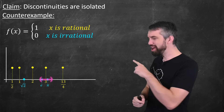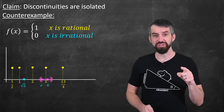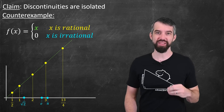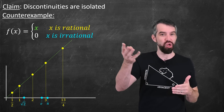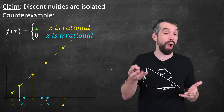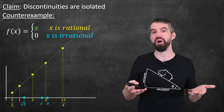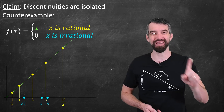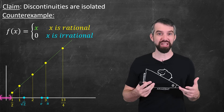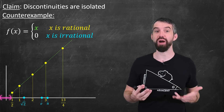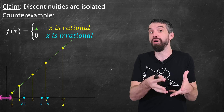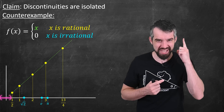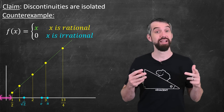If you modify this function — instead of having height 1 for the rationals, you make the height x for the rationals — you get the rationals going along a diagonal line while all of the irrationals remain along the axis. This function actually is continuous at one spot: it's continuous precisely at 0. No matter how close to the output of 0 I'd like to get, I can just zoom in on the inputs until all the heights are within that range. So 0 is the only spot where this modified function is continuous.